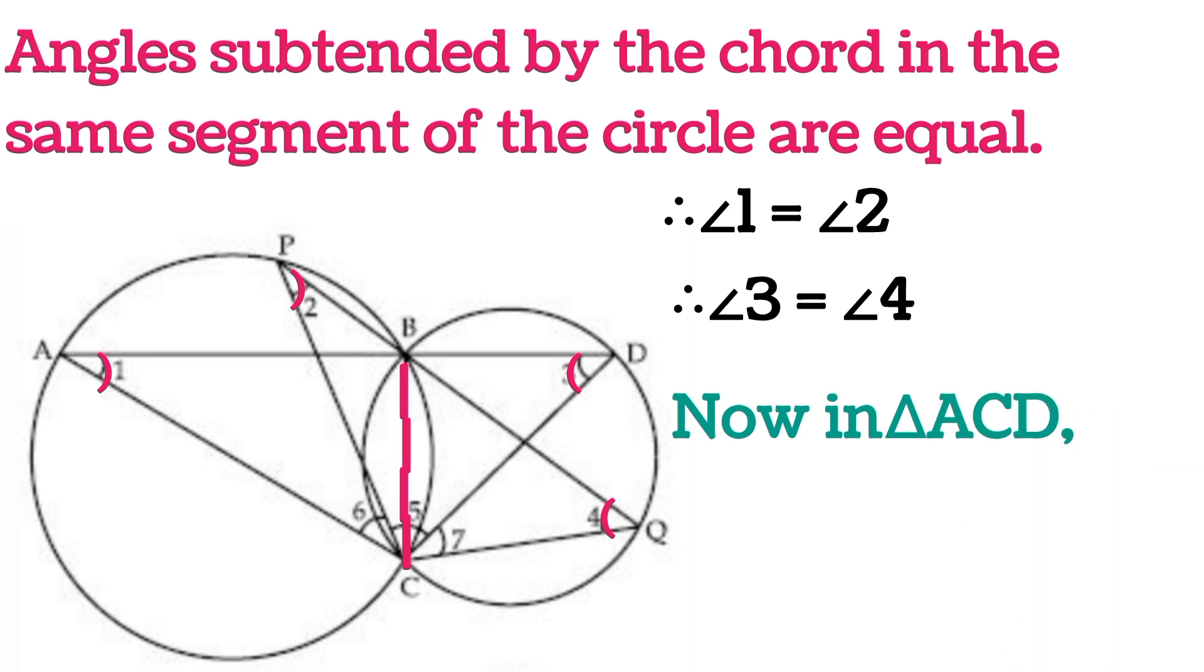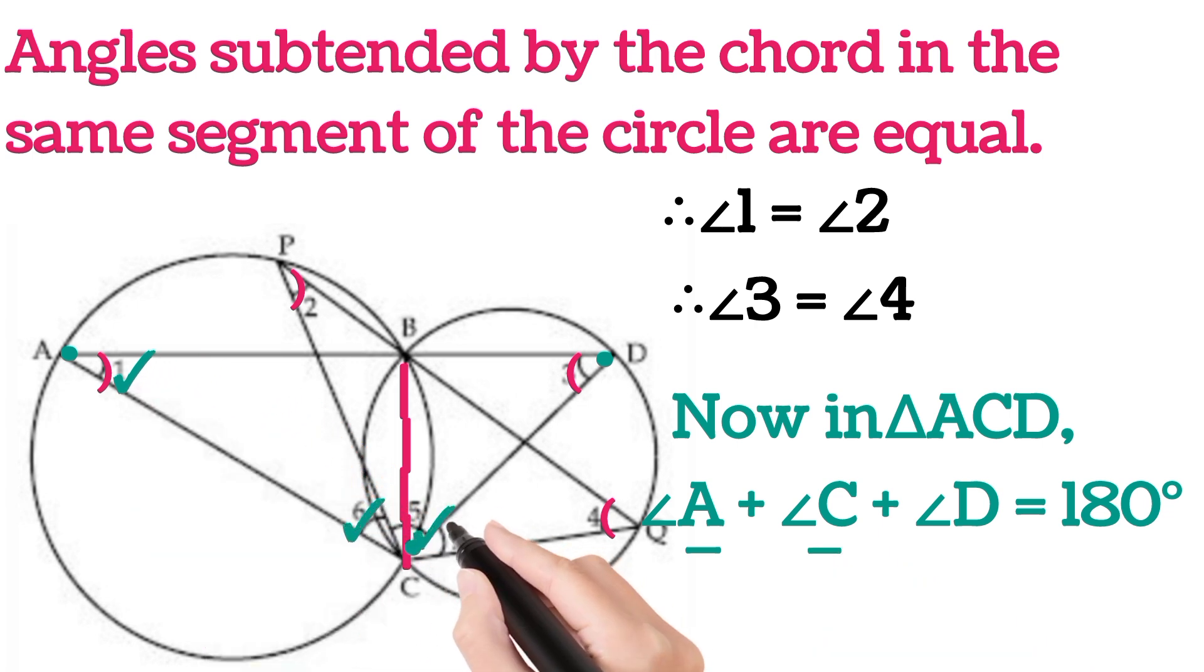We will take triangle ACD, this triangle. In this triangle, angle A plus angle C plus angle D will be equal to 180 degrees by angle sum property. A is 1, C is 6 and 5, and D is 3.